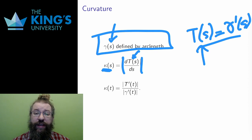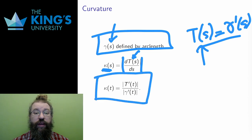Now, I actually can calculate curvature using an arbitrary parametrization. Here, kappa of t is the length of the derivative of the unit tangent divided by the length of the ordinary tangent.